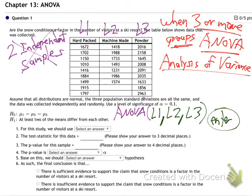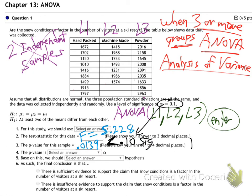It'll crank out everything you need. The test statistic is F — which is a bit new and different — and F equals 5.228. The p-value, which is more important as always, is 0.01339. The significance level they gave us is 0.10, so my p-value of 0.013 is way below 0.10. My p is low.